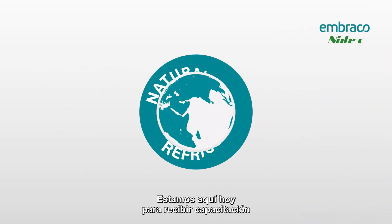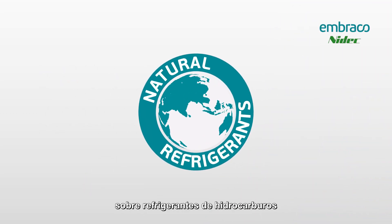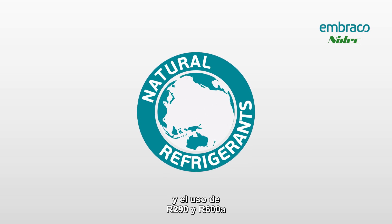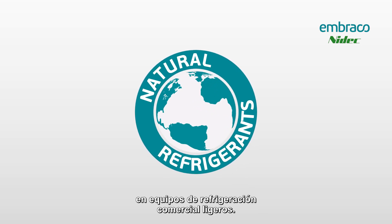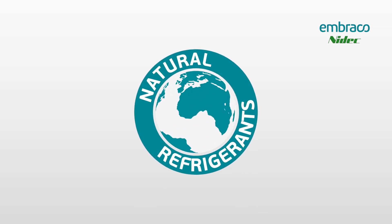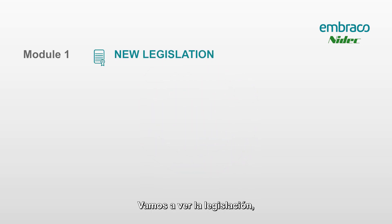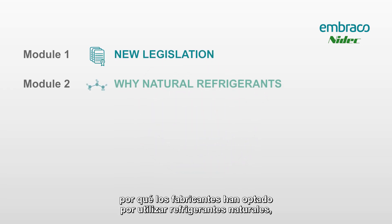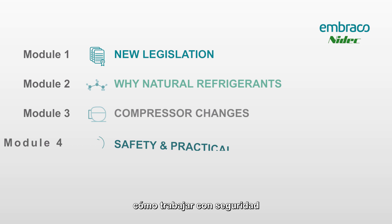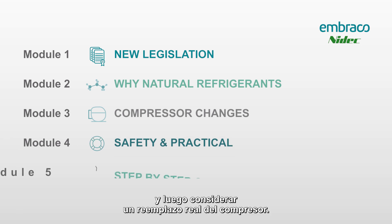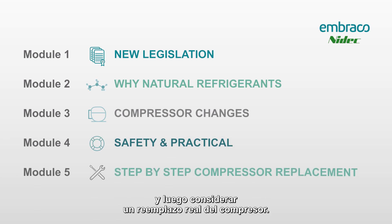We are here today for training on hydrocarbon refrigerants, and we're going to look at using R290 and R600A in light commercial refrigeration equipment. We're going to go over a few different topics today: legislation, why manufacturers have chosen to use natural refrigerants, the compressor changes, the similarities between these compressors and the systems, how to stay safe when working on these systems, and then look at an actual compressor replacement.